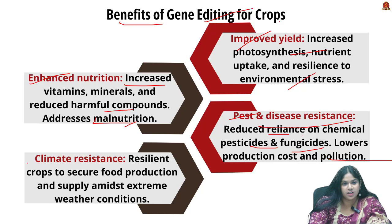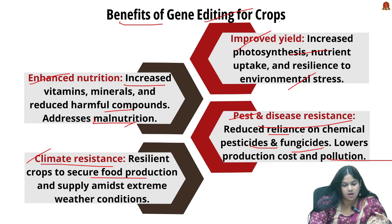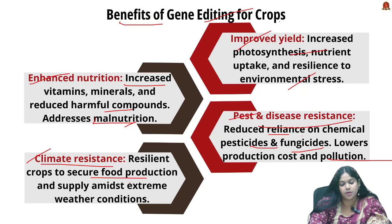Reducing reliance on chemical inputs lowers production costs for farmers and decreases environmental pollution. Finally, the ultimate goal is climate resilience — gene editing can develop crops that are more resilient to extreme weather conditions such as drought, heat, and flooding, ensuring stable food production in the face of climate change, helping to secure food supplies, especially for a country like India.